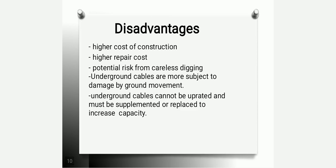The disadvantages of underground cables compared with overhead transmission lines are: higher cost of construction, higher repair cost, potential risk from careless digging, and being more subject to damage by ground movement. Underground cables cannot be easily operated and must be supplemented or replaced to increase capacity. These are the disadvantages with respect to construction, repairing, fault location, and maintenance.